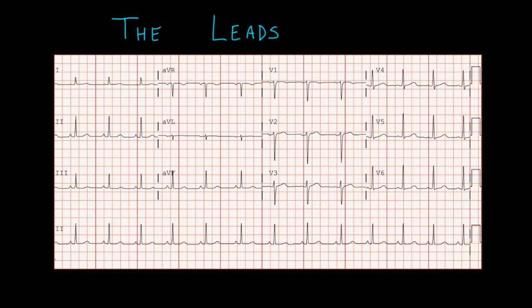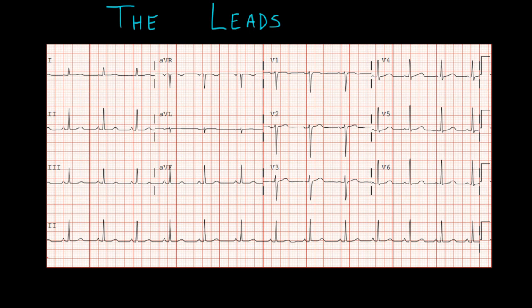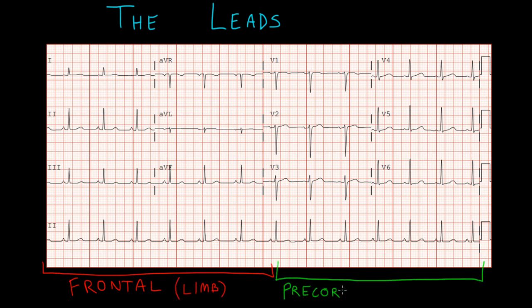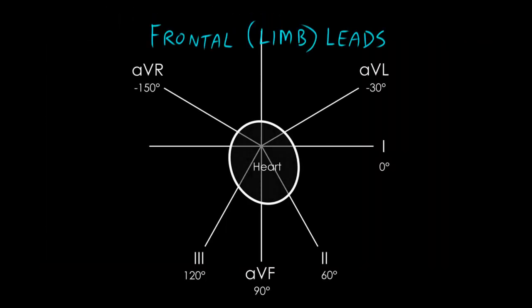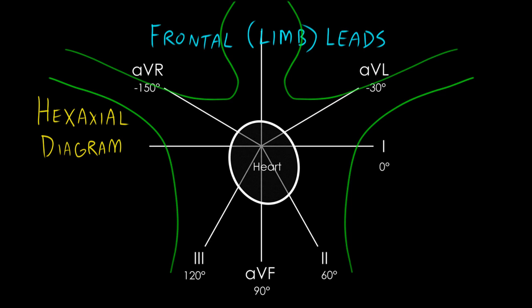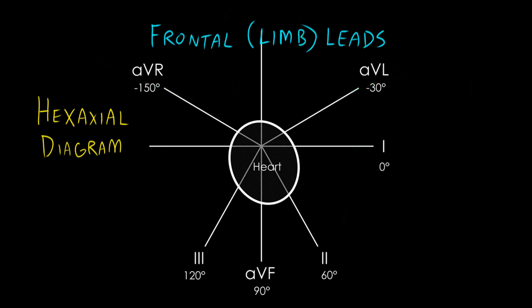Now let's talk in a little more detail about the leads that make up our 12-lead EKG tracing. So you'll remember that here on the left side, we have our frontal plane leads, which are also known as the limb leads. And here on the right side, we have our precordial leads, which are also called the chest leads. Now take a look at this diagram. We call this the hexaxial diagram. The hexaxial diagram gives us the spatial orientation of our six frontal plane leads relative to each other.